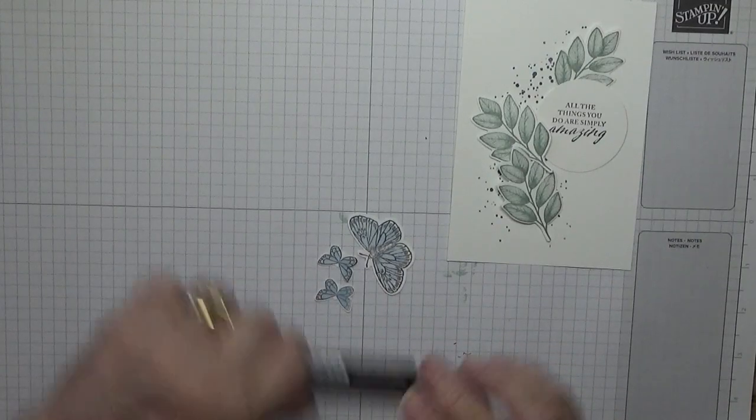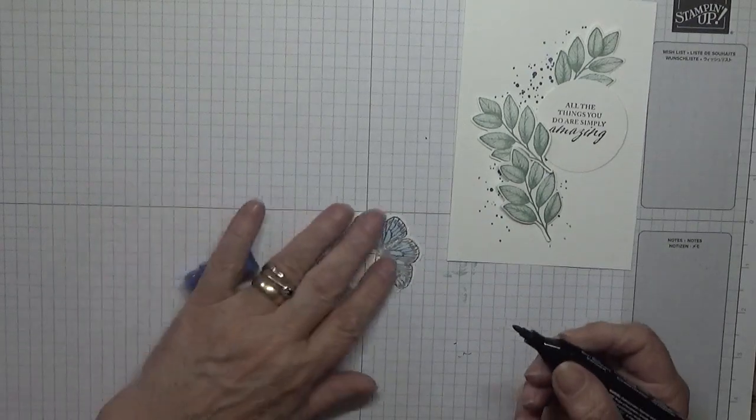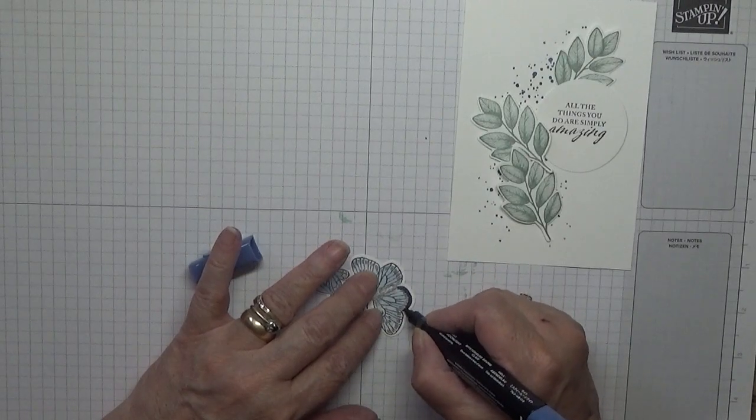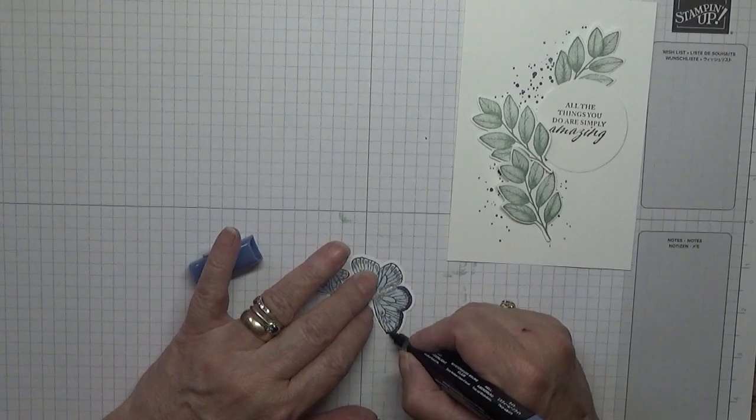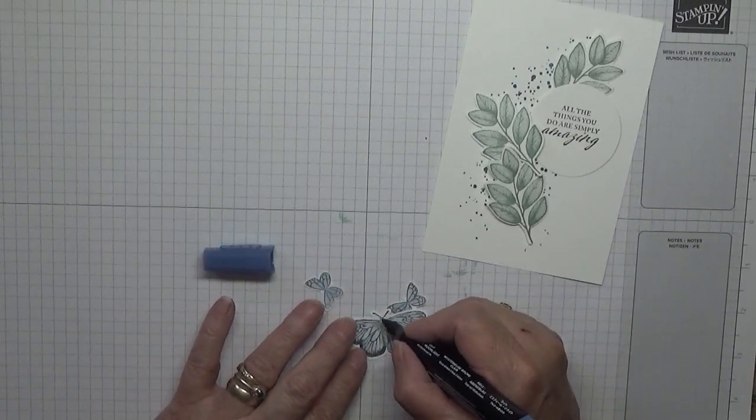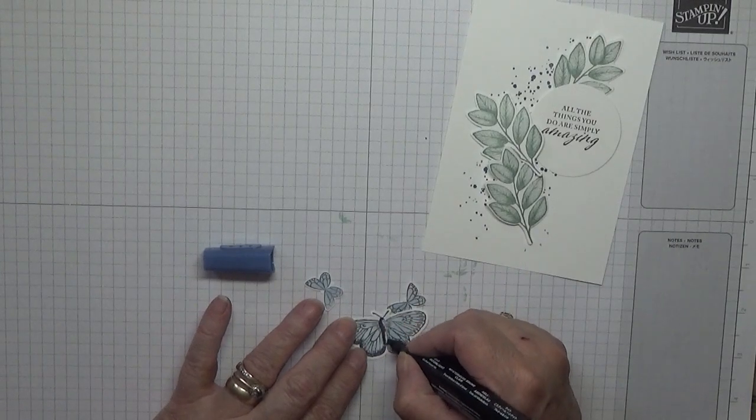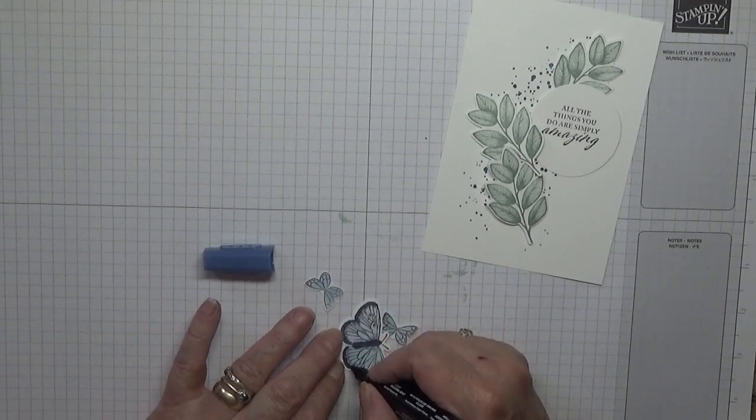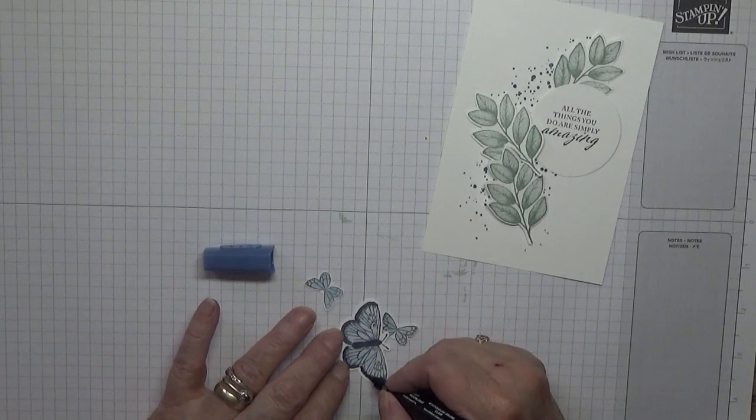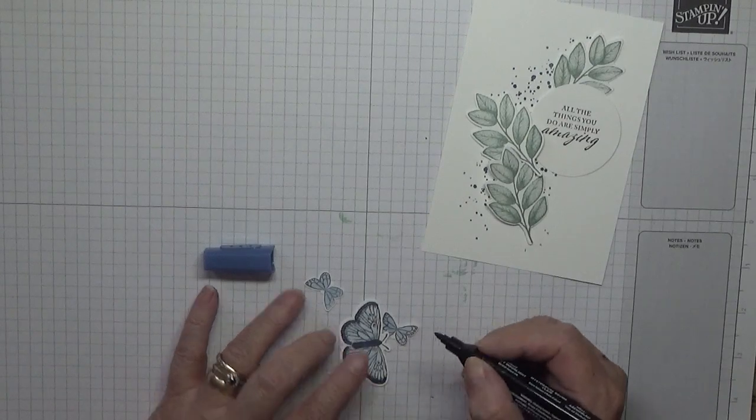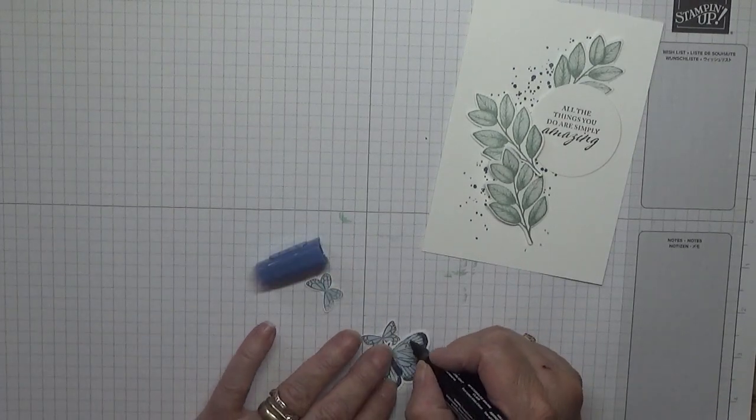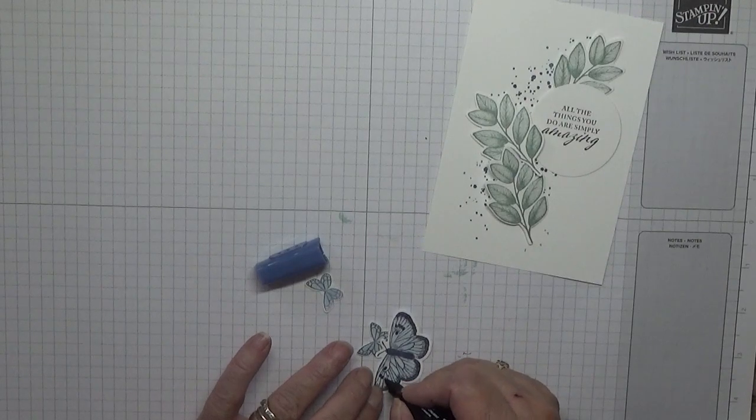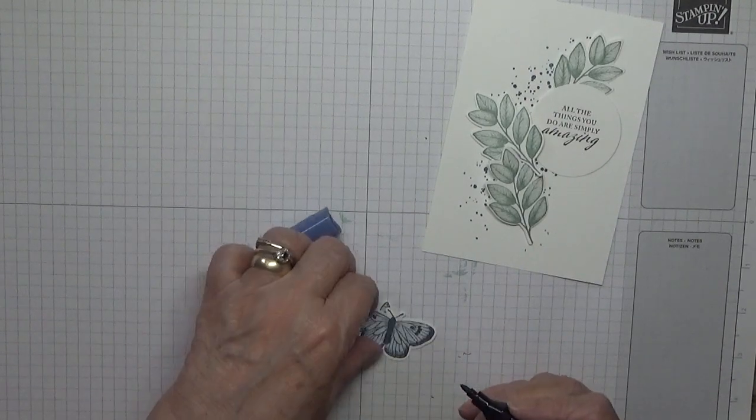You can see it better on the little ones. Right, and then with our Misty Moonlight, we're going to just go around the edge on these, also color the bodies in, and we're just going to mark off the marks that are on there.